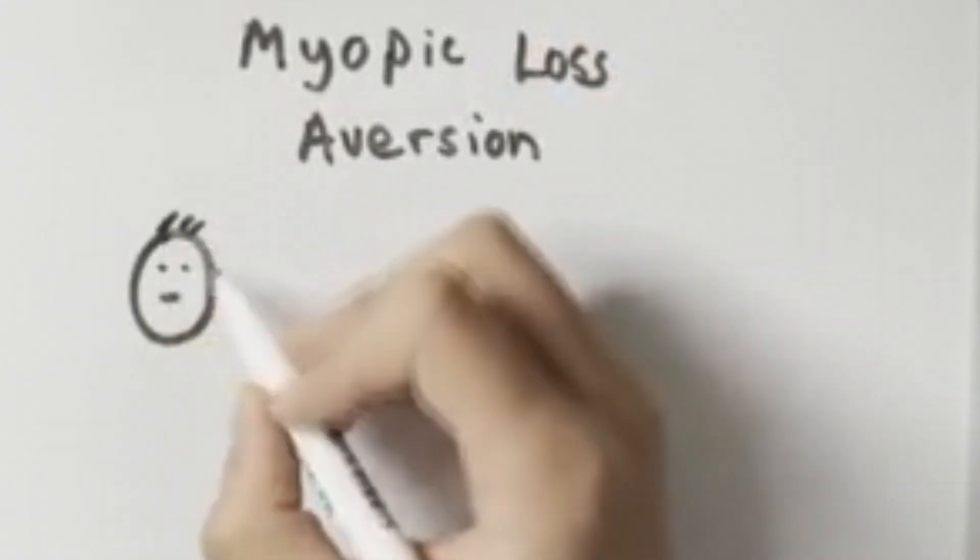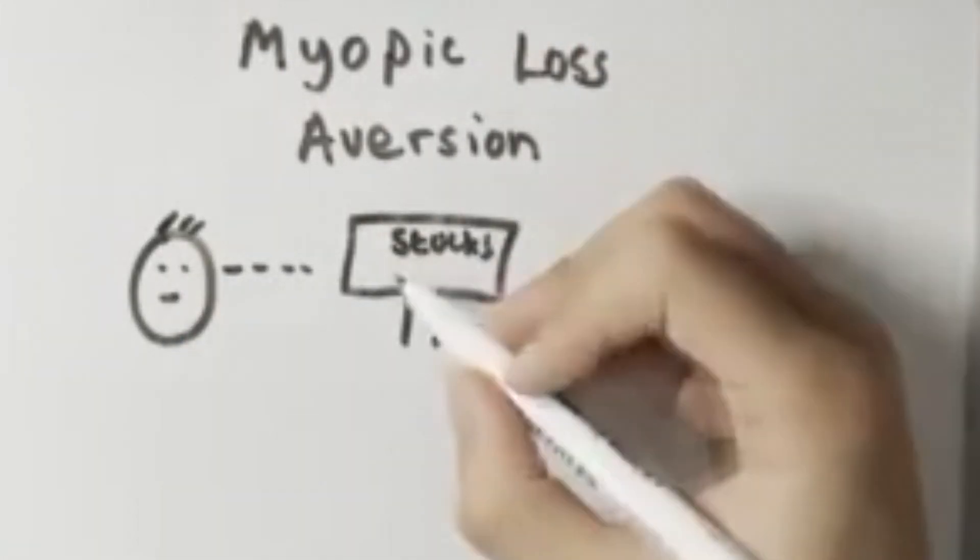A good explanation of this puzzle is through myopic loss aversion. This theory states that the important variable is how often someone checks the performance of their stocks.